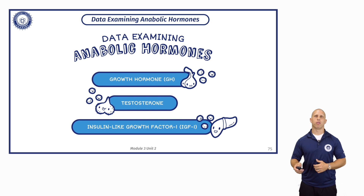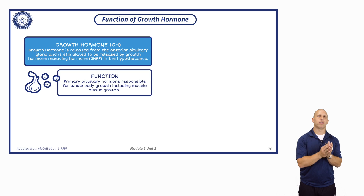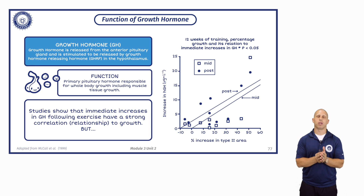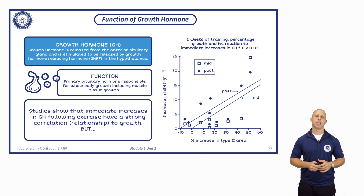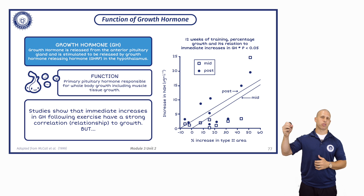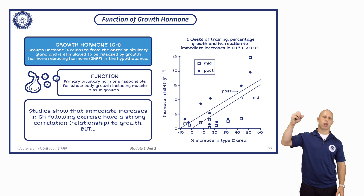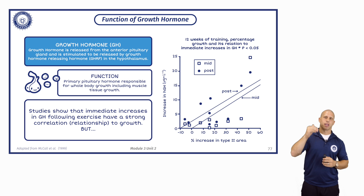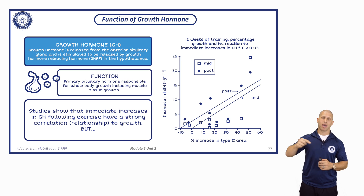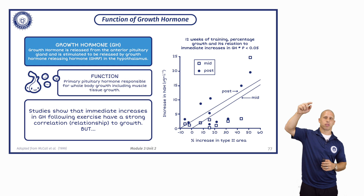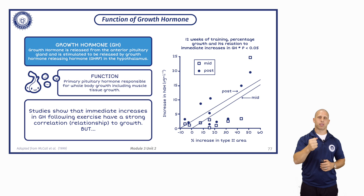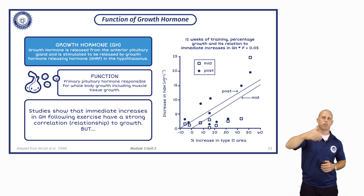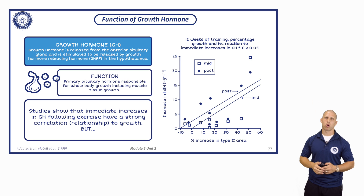So growth hormone is going to be released ultimately from the anterior pituitary. From the hypothalamus — remember the HPA axis — GNRH, or gonadotropin releasing hormone, is released, binds to the anterior pituitary, and that releases growth hormone, which then has negative feedback to the hypothalamus. Once that negative feedback sets in, growth hormone stops being released, and once it stops, negative feedback is removed and we have that process — just like we did with cortisol.